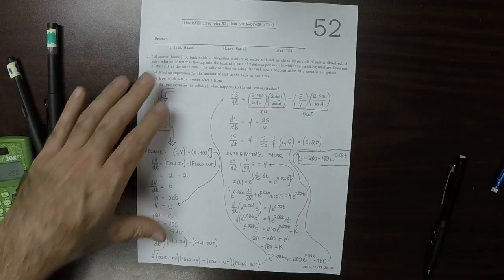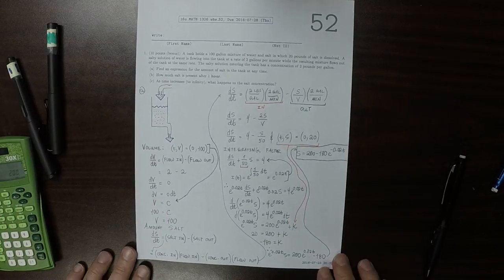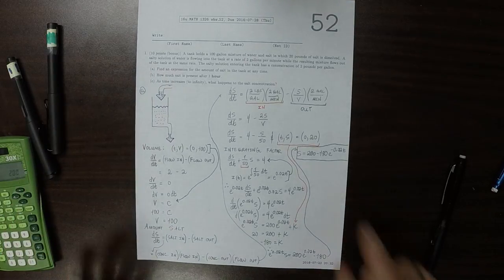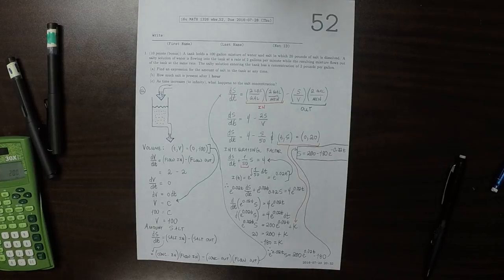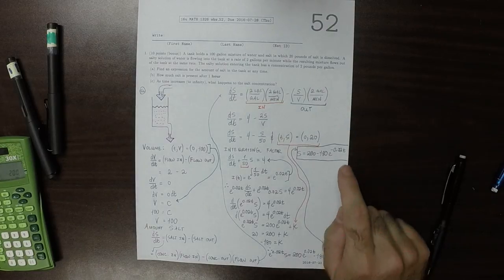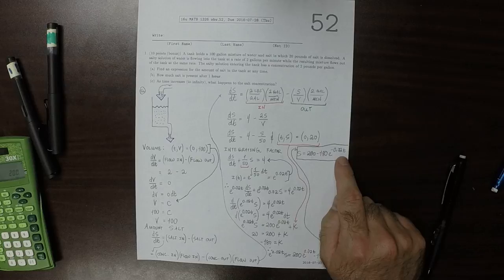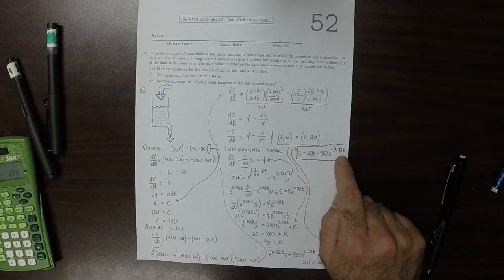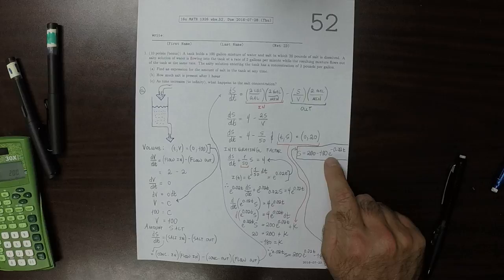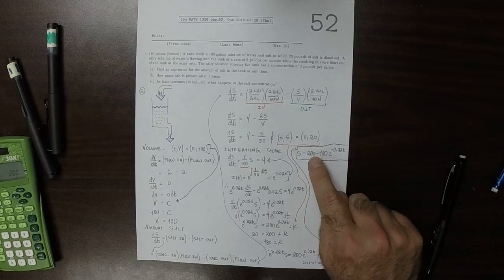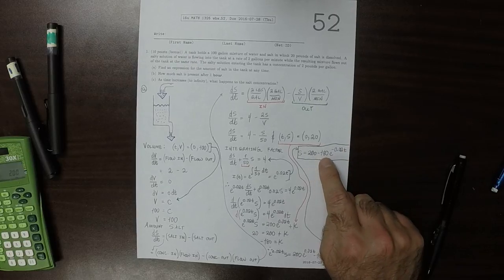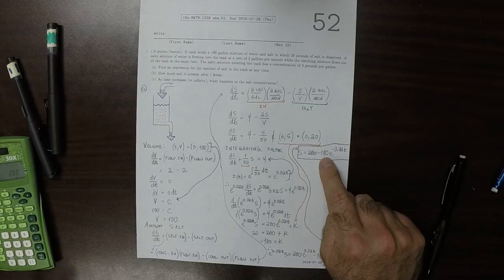So now let's check our understanding and see if that makes any sense to us. So at t is 0, at time 0, we should have 20 pounds of salt. So if we plug in t is 0, this is exponential of 0, which is 1. 200 minus 180 is 20. So that's right.